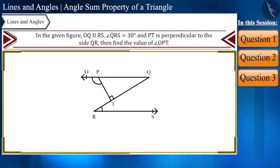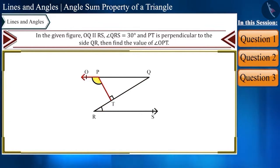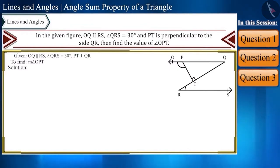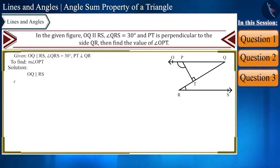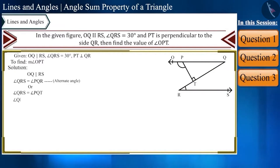Now the last question: in the given figure, OQ is parallel to RS, angle QRS equals 30 degrees, and side PT is perpendicular to side QR. Find the value of angle OPT. Since OQ is parallel to RS, angle PQT is an alternate angle to angle QRS, therefore angle PQT equals angle QRS equals 30 degrees.